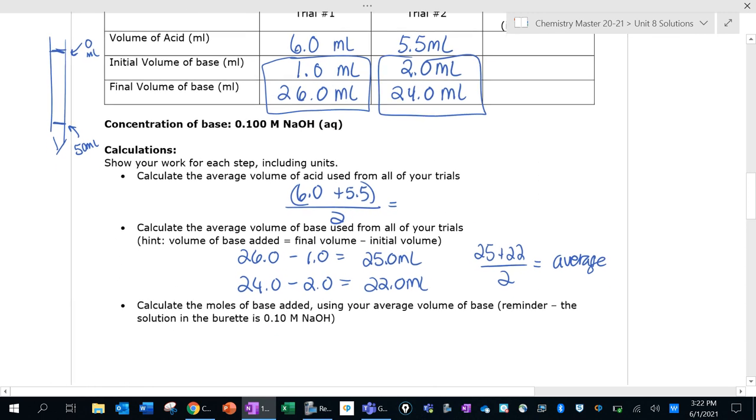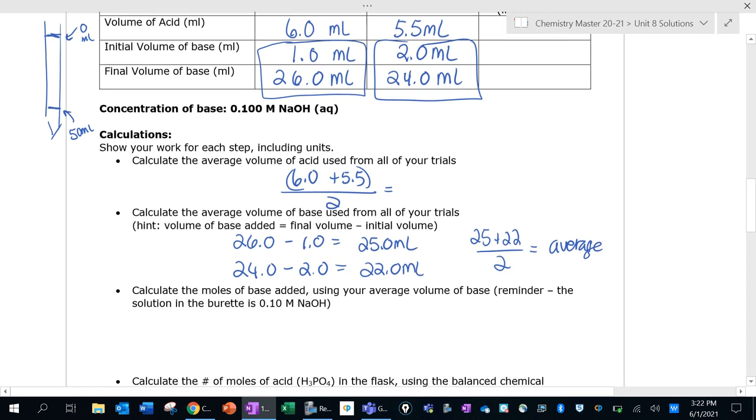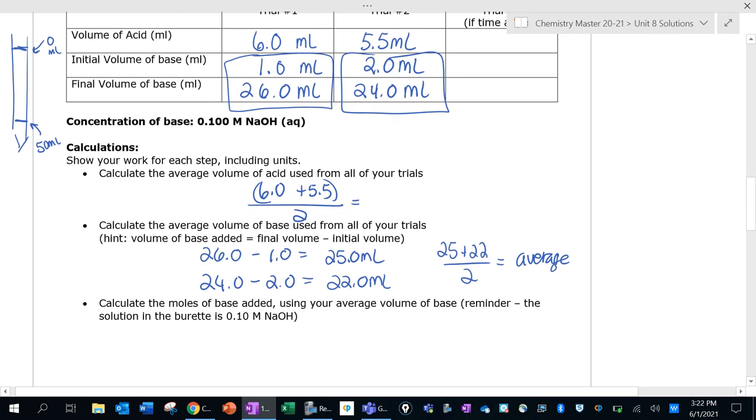Okay, so now let's figure out how many moles of base we added. We know that the solution in the burette is 0.1 molar NaOH. Why? Because I made the solution and I measured it and I told you it's 0.1 molar NaOH. So that is our known solution. Remember in titration, what we're doing here is we are adding a solution of known concentration.